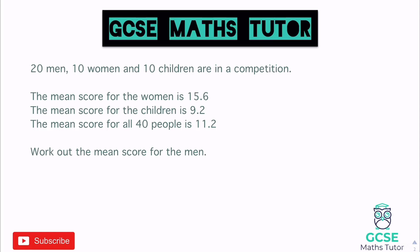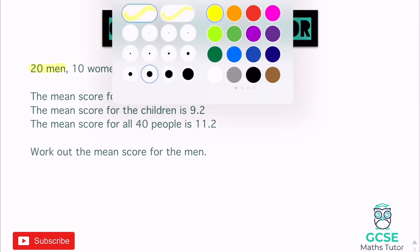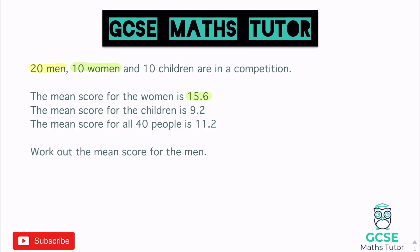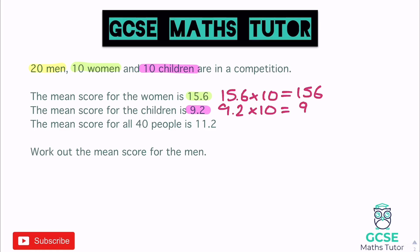Let's link these up and multiply them out. We've got 20 men but no mean given, so skip that for now. We've got 10 women with a mean of 15.6, so 15.6 times 10 gives a total score for the women of 156. Then 10 children with a mean of 9.2, so 9.2 times 10 gives a total score of 92. For all 40 people the mean is 11.2, so 11.2 times 40 gives us 448 as the overall total.